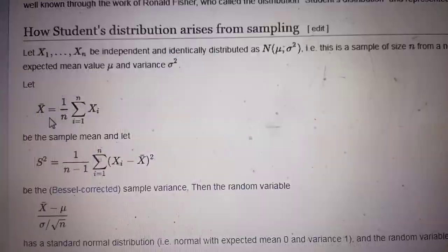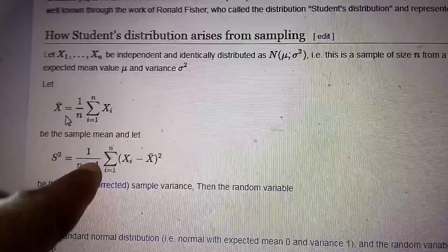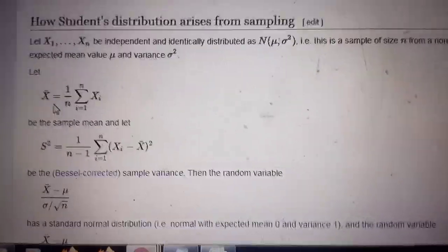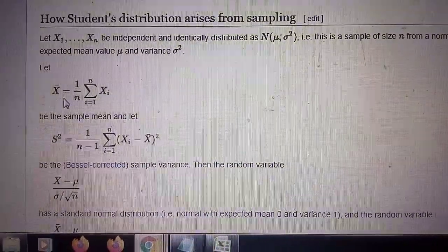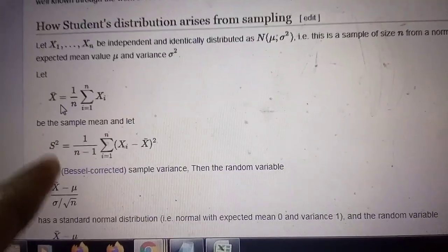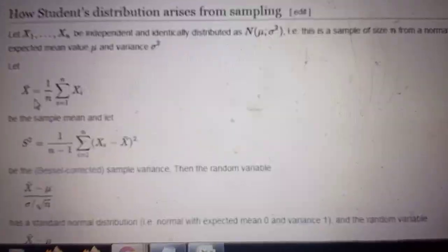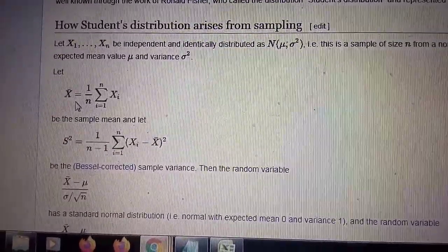Usually the variance definition you have seen has 1 by n in the denominator, but here it is 1 by n minus 1. That is not a big difference, but it is done to make it an unbiased estimator. That means if you take the expectation of this thing, this will turn out to be n minus 1 times σ². So that is why we divide it by n minus 1.